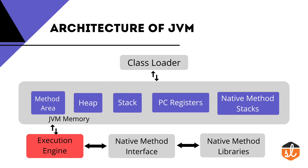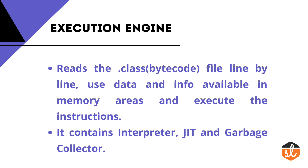The Execution Engine reads the .class file line by line, uses data and information present in various memory areas, and executes instructions. It also contains three sub-components: the Interpreter, the JIT Compiler (Just-In-Time Compiler), and the Garbage Collector.